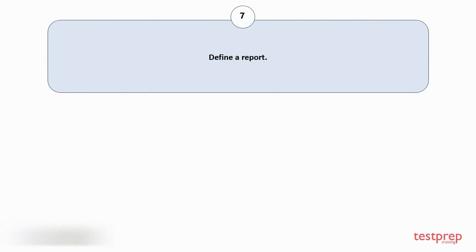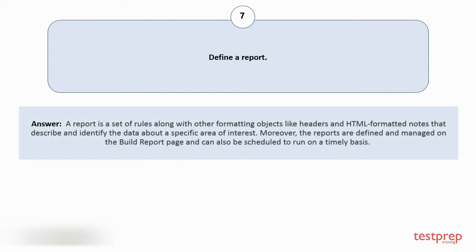Question number 7: Define a report. A report is a set of rules along with other formatting objects like headers and HTML formatted notes that describe and identify the data about a specific area of interest. Moreover, the reports are defined and managed on the build report page and can also be scheduled to run on a timely basis.